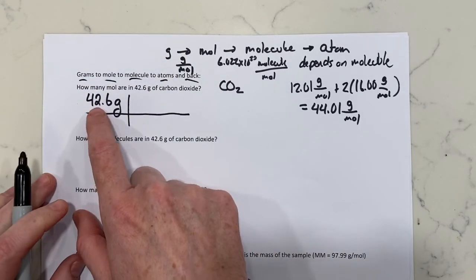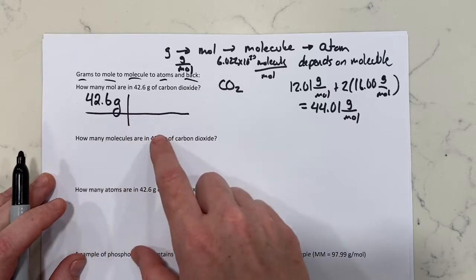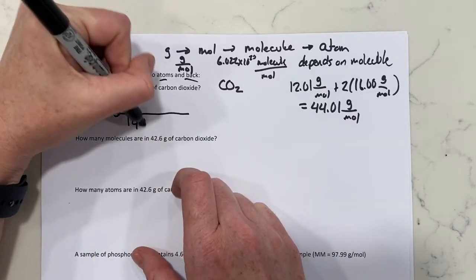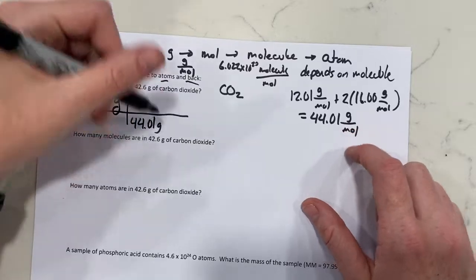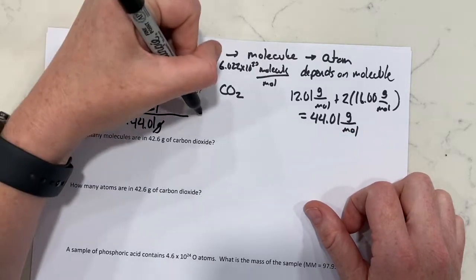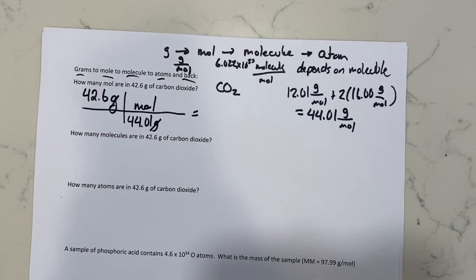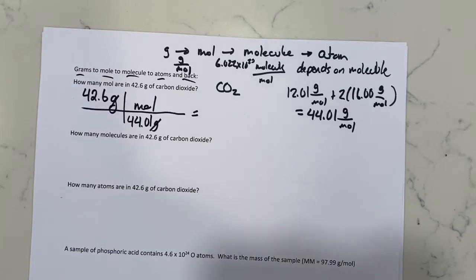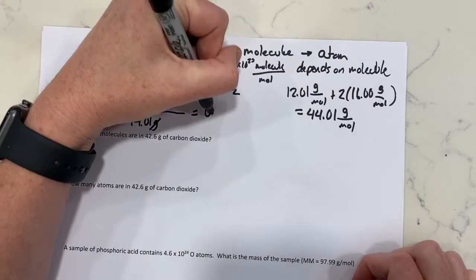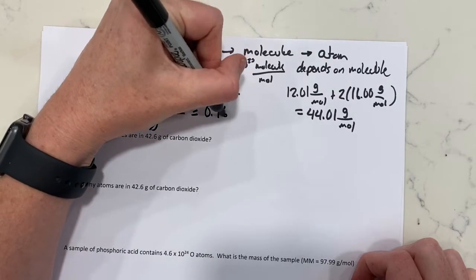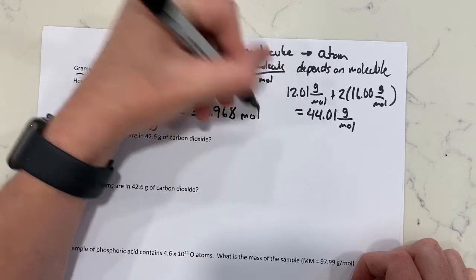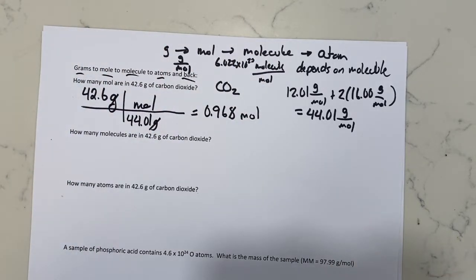Using dimensional analysis: 42.6 grams divided by 44.01 grams per mole. Grams cancel, and I get an answer of 0.968 mole. That makes sense — 0.968 is just a little bit less than one, exactly what we were expecting.